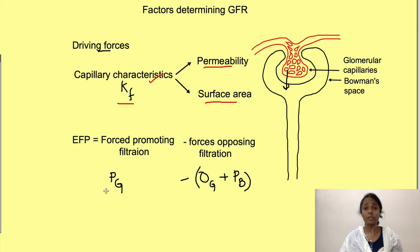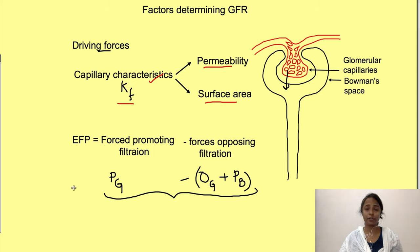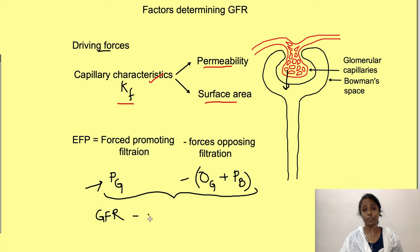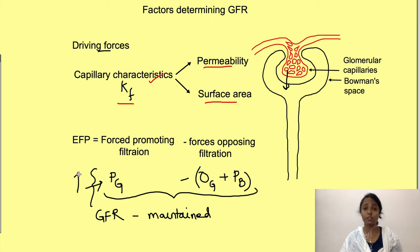Since these forces affect the glomerular filtration rate, any factor which affects them can affect GFR. However, there is a need to maintain GFR in a constant range for effective excretion of waste products. So if any factor tends to change GFR, the body tries to bring it back into the normal range.